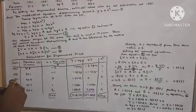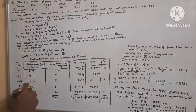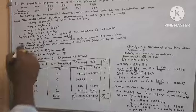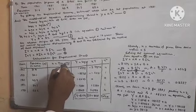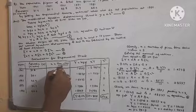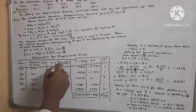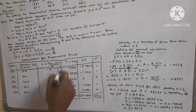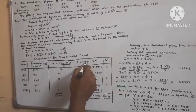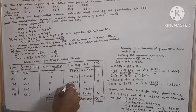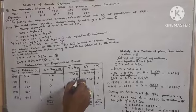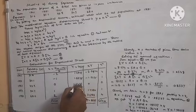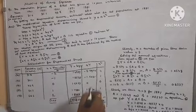For year 1961, population y = 43.9. x = (1961 − 1961) / 10 = 0. Capital Y = log 43.9 = 1.6425. x·Y = 1.6425 × 0 = 0.